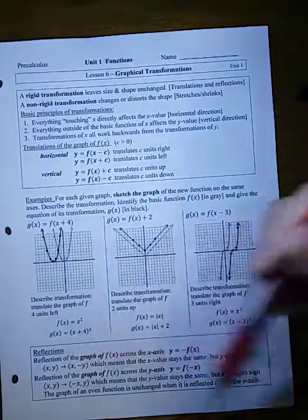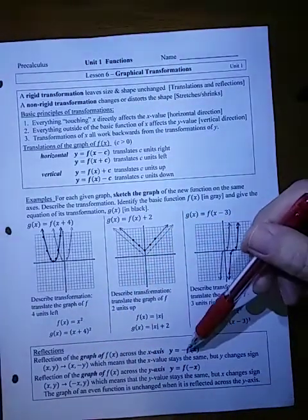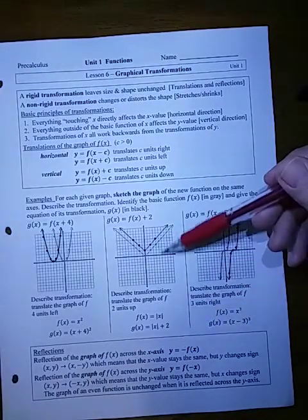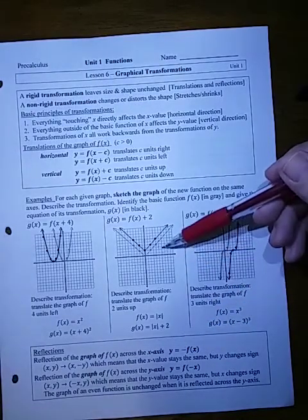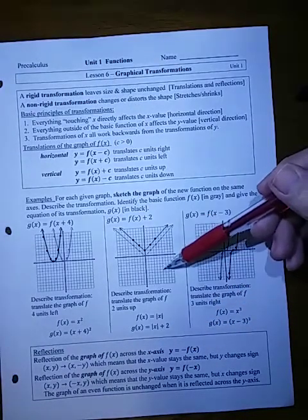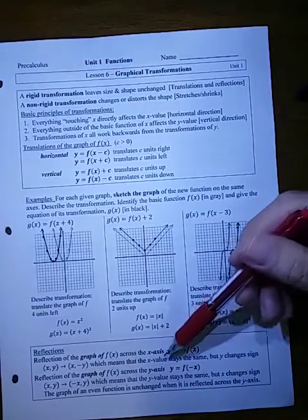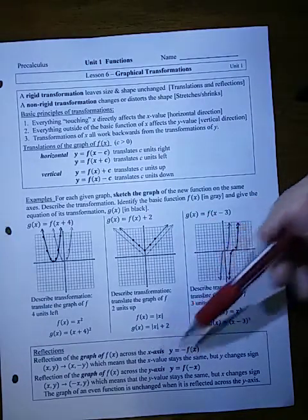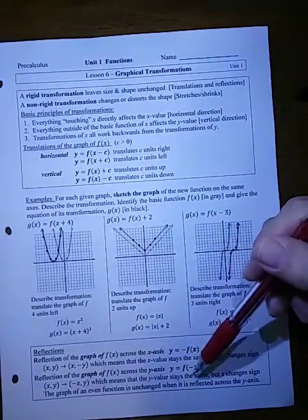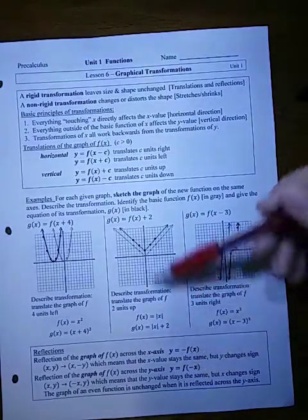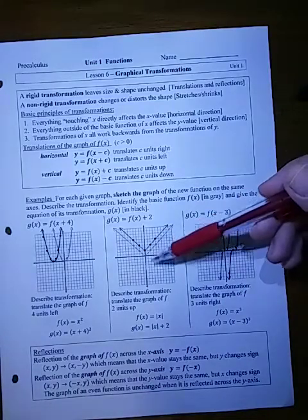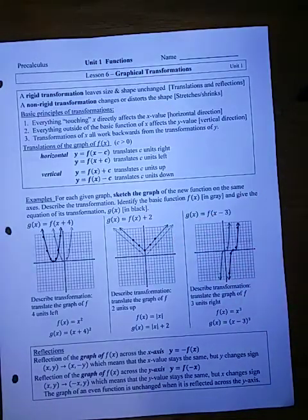Reflections across the axis: if you put the negative on the outside, that's going to change the y value, so it goes from up to down or down to up — that's a reflection across the x-axis. If you put the negative inside, it changes across the y-axis.